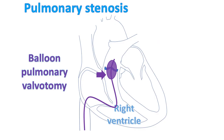In severe cases, an obstructed pulmonary valve can be opened by balloon pulmonary valvotomy. In this procedure, a balloon catheter is introduced through the femoral vein and guided to the right heart under fluoroscopy. When the balloon is across the pulmonary valve, it is inflated, relieving the obstruction. The procedure is done under local anesthesia and there is no need for a sternotomy.